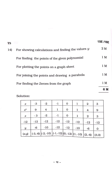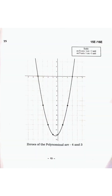For Question 14 on graphing a polynomial: for showing calculations and finding values of y in the table you get two marks, for finding the points of the polynomial one mark, for plotting the points on the graph sheet one mark, for joining the points and drawing a parabola one mark, and for finding the zeros from the graph one mark — totaling six marks. The table and graph are both very important. Remember to write the scale on both the x-axis and y-axis.